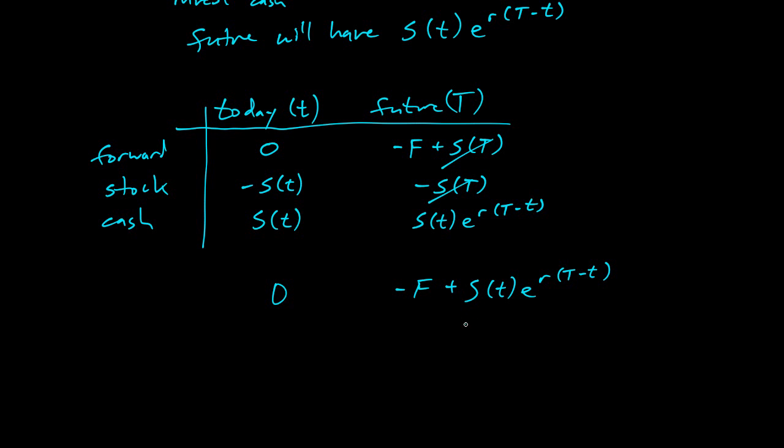So this we can say equals zero. And so F equals S(t) e to the r(T-t). So the forward contract price is directly related to the current spot price with a time value of money factor.